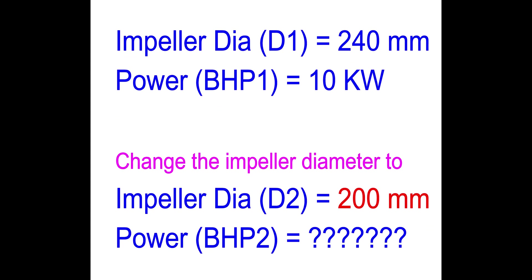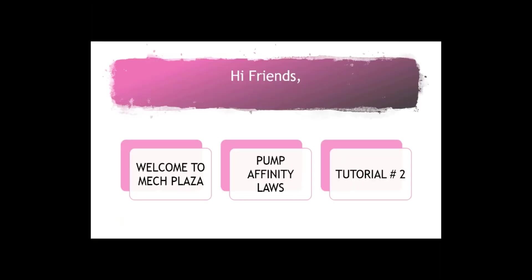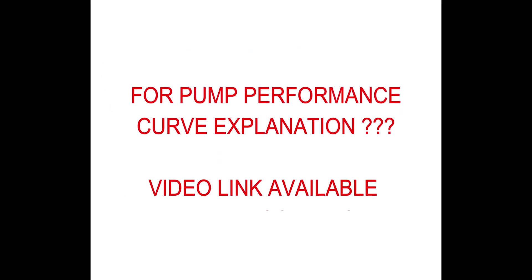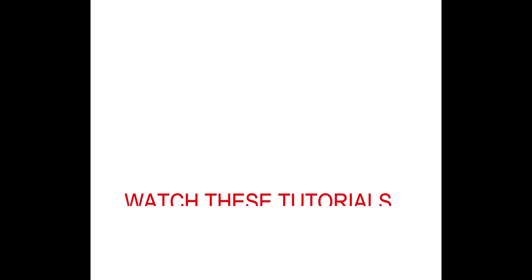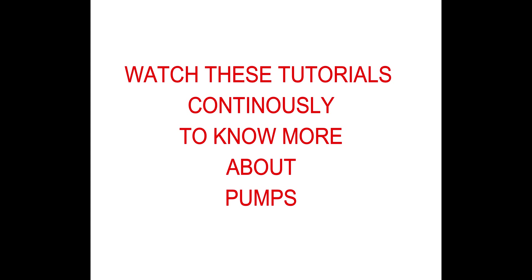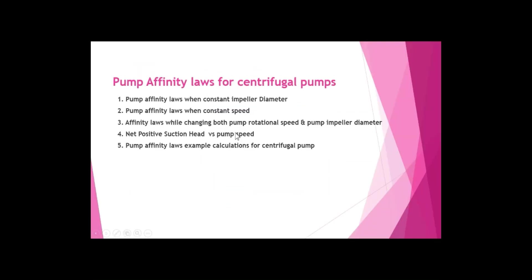The same applies when considering impeller diameter changes. If you are running a pump with a 240 mm diameter impeller and you trim the impeller to 200 mm, what is the power consumption? This is my second tutorial. If you want to know how to read pump performance curves, you can find that video in the description link. Please watch these tutorials continuously to learn more about pumps and pump affinity laws for centrifugal pumps.